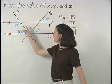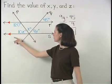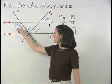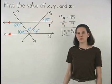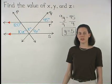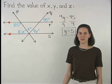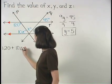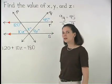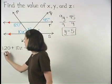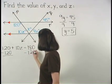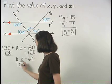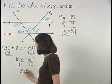Next, using the transversal p and the parallel lines r and s, we can see that the angles marked as 120 and 10z are same side interior angles. Since we know that if two parallel lines are cut by a transversal, then same side interior angles are supplementary, we can set up the equation 120 plus 10z equals 180. Subtracting 120 from both sides gives us 10z equals 60, and dividing both sides by 10, we find that z equals 6.